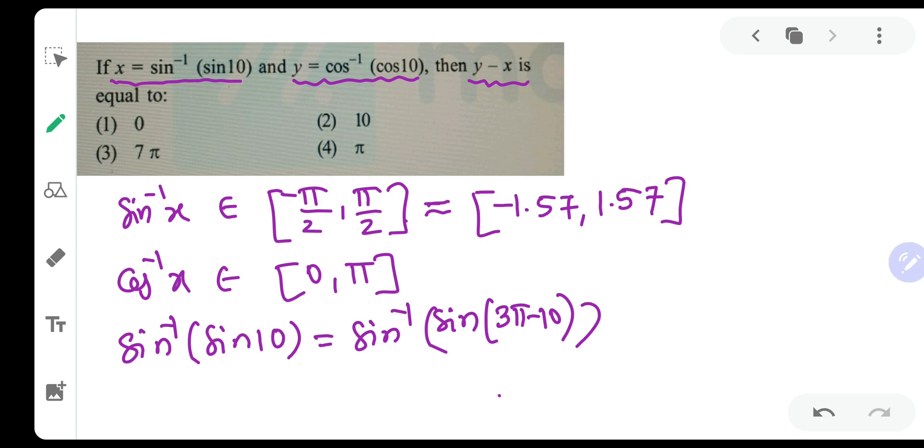As we all know, sin of 3 pi minus 10 is sin of 3 pi cos of 10 minus cos of 3 pi sin of 10. So if you solve that, you will definitely get sin of 10. So sin of 10 can very well be written as sin of 3 pi minus 10. So now sin inverse and sin, if they nullify each other and we get 3 pi minus 10.